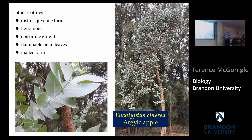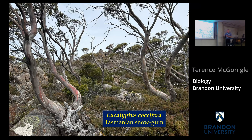Some species adopt what they call the mallee form, which is more like a shrub kind of form. Here on Mount Wellington in Tasmania, these mallee forms have trees that are rather short with multiple stems coming from the base. This can occur either at elevation or in rather dry conditions. Here is Eucalyptus pauciflora, the snow gum — some of the different features of eucalyptus.